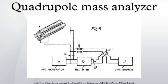In a quadrupole mass spectrometer, the quadrupole is the component responsible for filtering sample ions based on their mass-to-charge ratio. Ions are separated based on the stability of their trajectories in the oscillating electric fields that are applied to the rods.